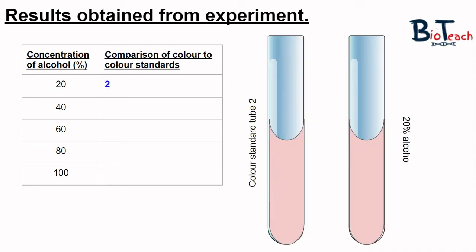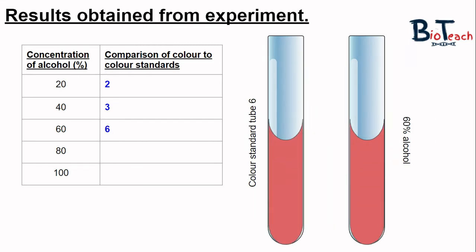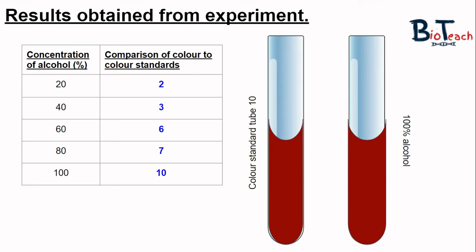When comparing, simply hold the boiling tubes side by side and visually compare. The colour standard tube 2 looks very similar to the 20% alcohol concentration, so record 2. For the 40% alcohol tube, it looks between standard tubes 2 and 4, with some dark and some lighter patches, so record the intermediate value of 3. The 60% alcohol tube looks very similar to standard tube 6, so record 6. The 80% tube looks between 6 and 8, so log that as 7. And the 100% alcohol looks the same as tube 10, so record 10.